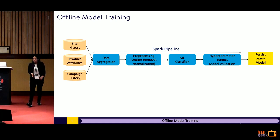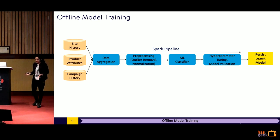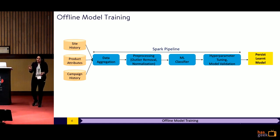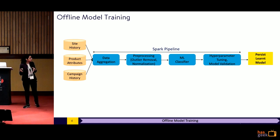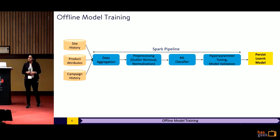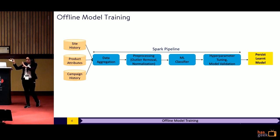Once I have the best model, I just persist that model. We are using Spark here for two reasons. Spark is a distributed processing platform and we have lots of data — these two work really well together so we can do all the data aggregation, processing, and modeling really fast. Secondly, Spark allows us to store not only the ML classifier but the whole pipeline as a model, which means when taking the model from offline to online, I do not have to repeat aggregation and processing steps. Just give raw data to this pipeline and out come the scores.